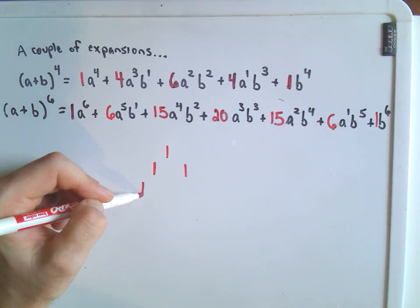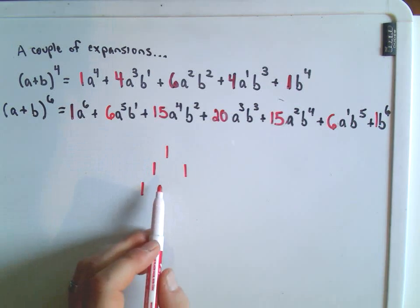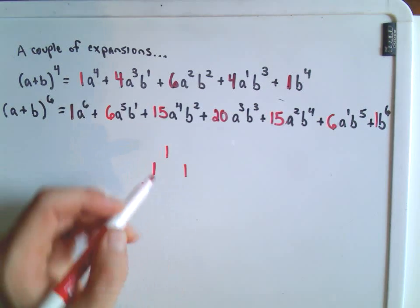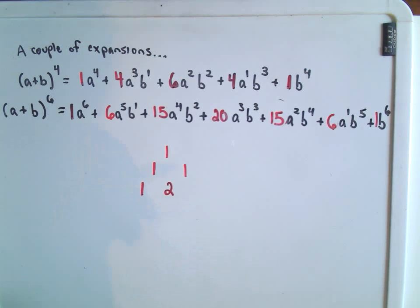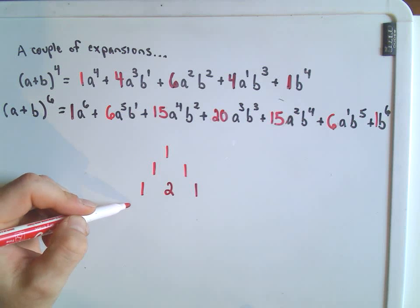And we do this again. But now what we're going to do is we add 1 and 1 and we get the number 2 in the middle. And then we just stick another 1 off to the side. And then we just keep this process up.